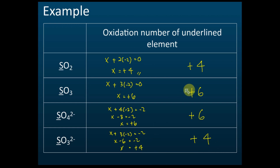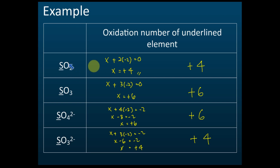These are the calculations and the answers. There should be no problems. Those we don't know, we put x. Those we know, we just write — for example, 2 oxygens: 2 times negative 2. And this is equal to the sum of the charge. The sum of the oxidation states is equal to the charge, and the charge is equal to 0. So then we get positive 4.